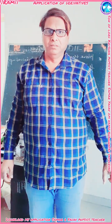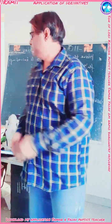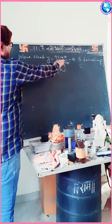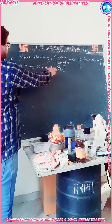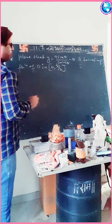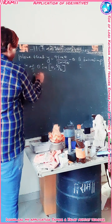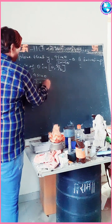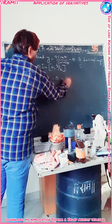Today, in a mathematics application of derivatives, we have a numerical problem. Prove that y = 4sinθ/(2+cosθ) − θ is an increasing function of θ in the interval 0 to π/2. We are given y = 4sinθ/(2+cosθ) − θ, which we define as f(θ).